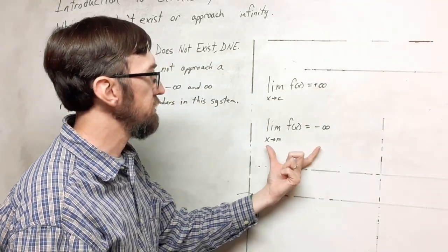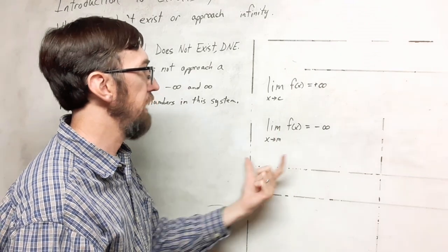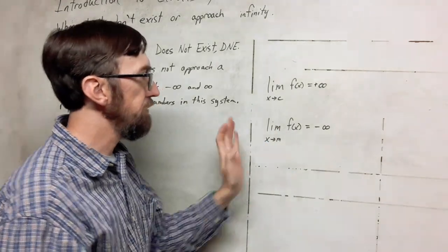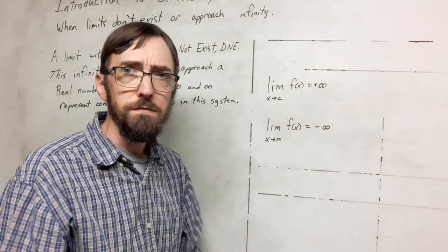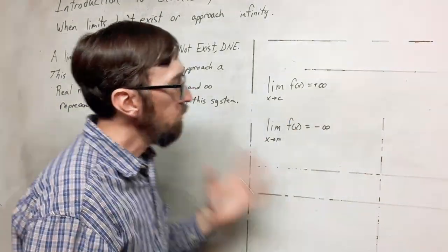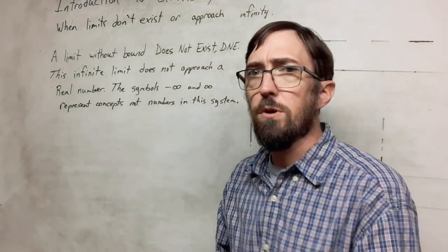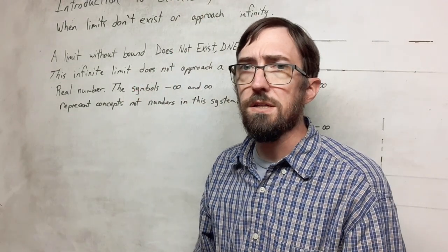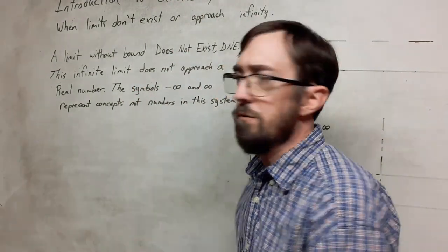And likewise, with this one as well, if we approach another value and we go towards negative infinity, we can write negative infinity there to indicate we know where this is going. We could also have other cases where the limit just does not exist for whatever reason.